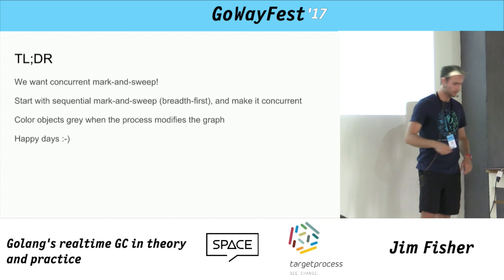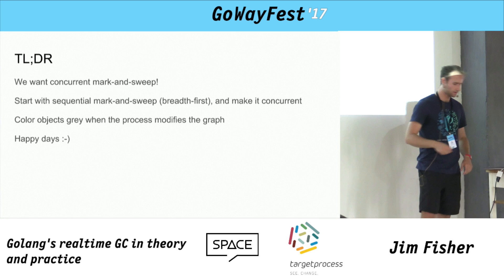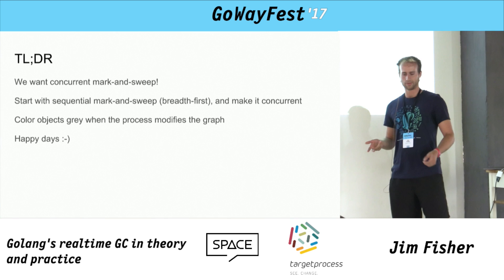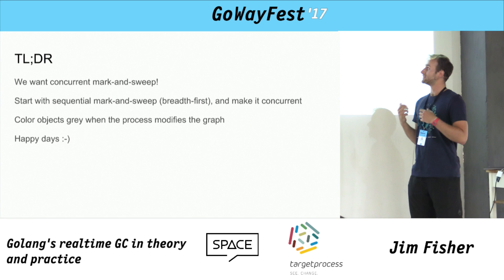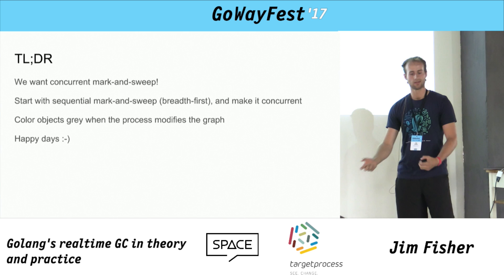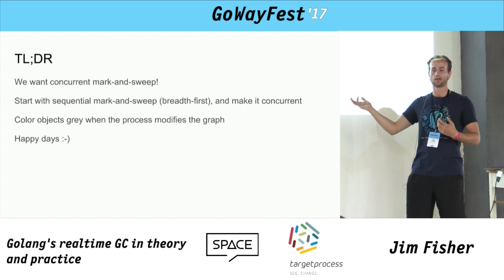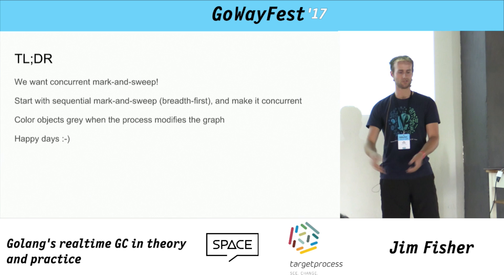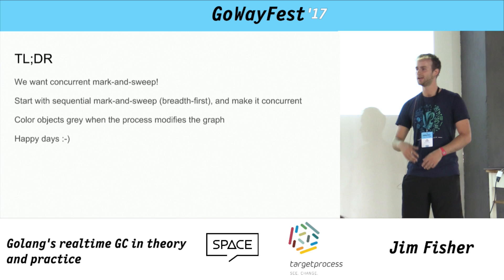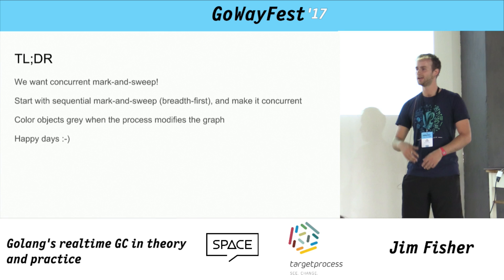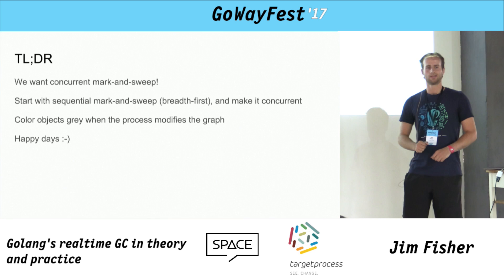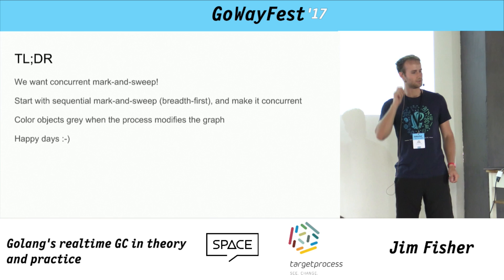In summary: Go's garbage collector takes the classic mark and sweep algorithm and makes it concurrent to remove undesirable pauses. It does this by maintaining the key black-to-white invariant using recoloring logic. The theory says your process runs constantly without pauses — predictable, and you can forget about garbage collection as a problem. I'll now hand over to Will, who will talk about garbage collection in practice and see if any of that is actually true.